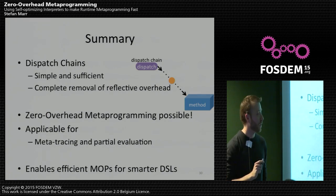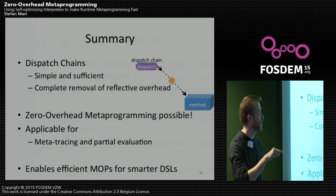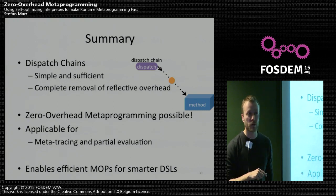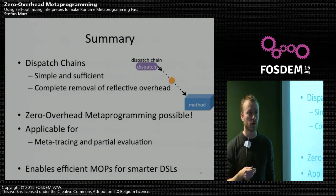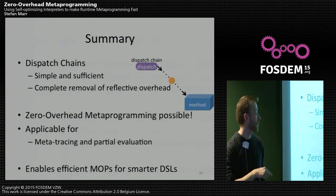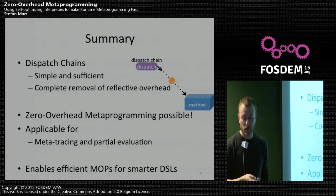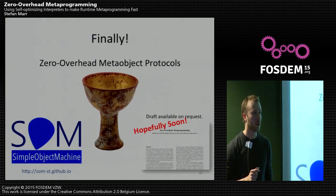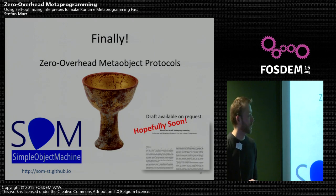To sum up: the idea I wanted to show is that metaprogramming doesn't have to be slow. There is a very simple technique — dispatch chains — which are essentially a more generalized form of what virtual machines already do. We can apply that to reflective method invocation, reflective field access, and also to fancy meta-object programming, perhaps enabling new kinds of applications. If you would like to read up more in detail, I have a paper draft — not yet accepted, but shoot me an email and you can get it.